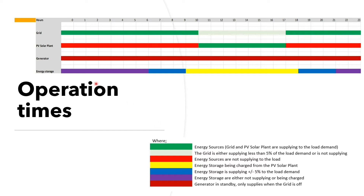The energy storage system is either not supplying or being charged at certain times. In yellow, the energy storage system is being charged from the PV solar system. In blue, the energy storage system is supplying plus or minus 5% of the load demand, while the PV is also supplying.